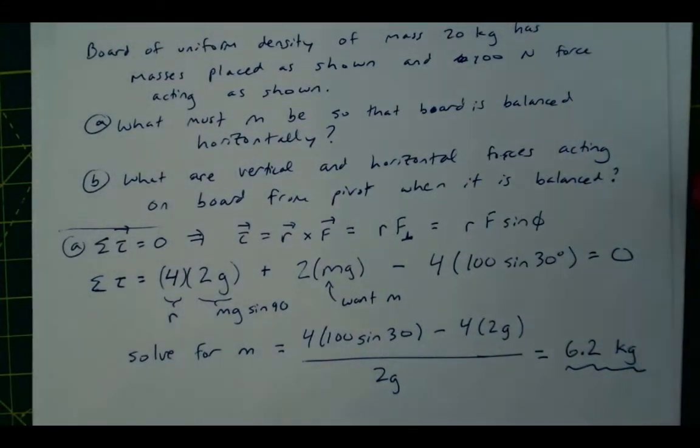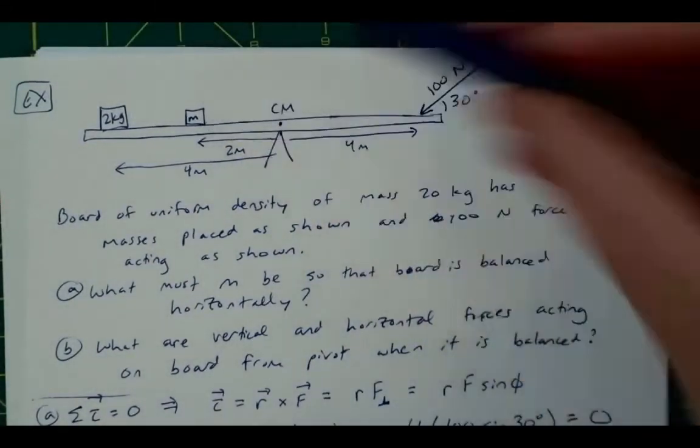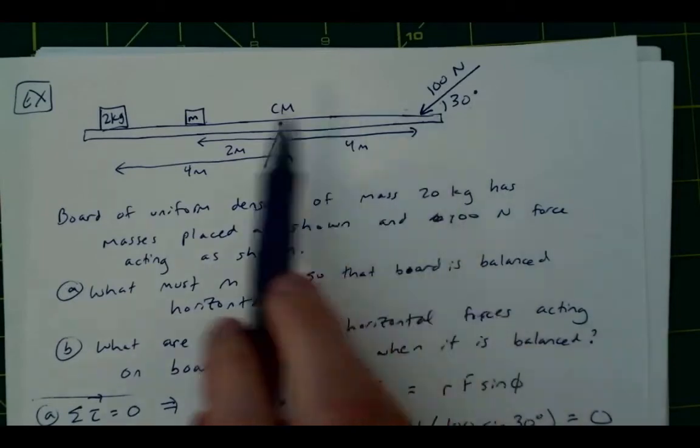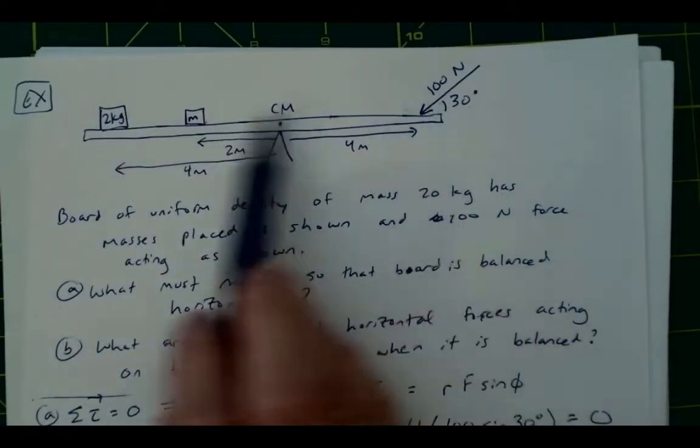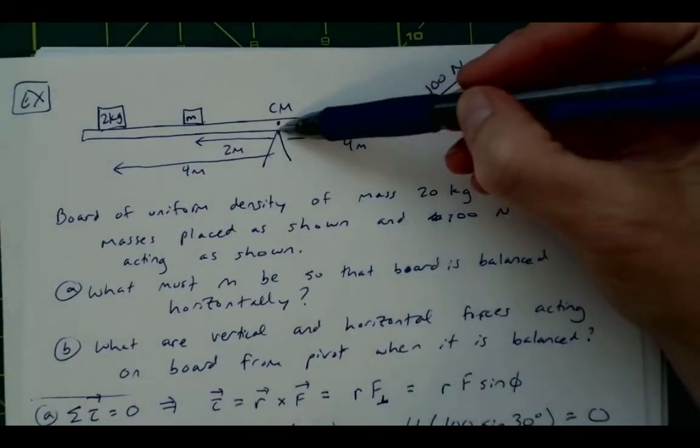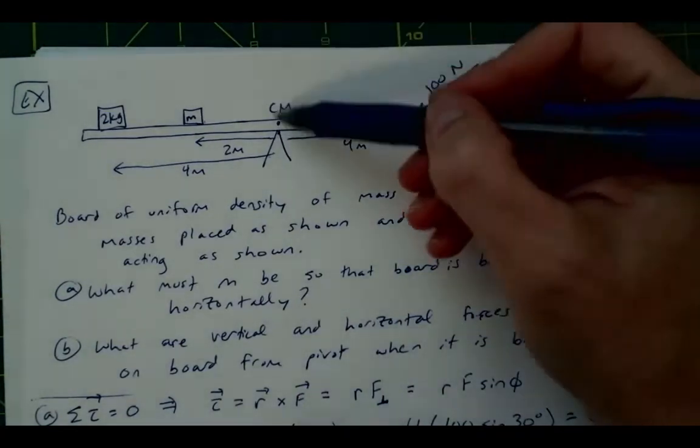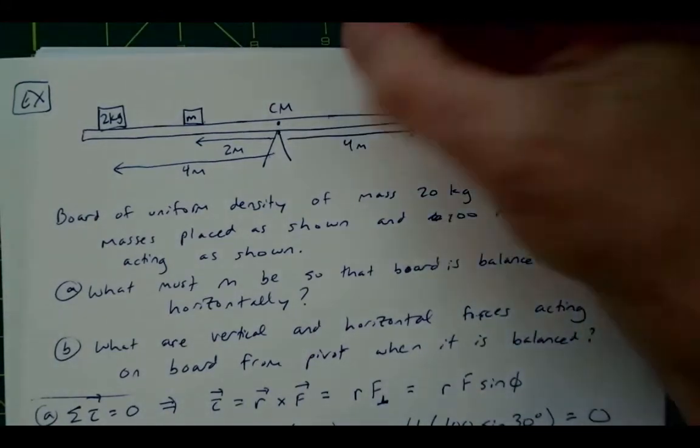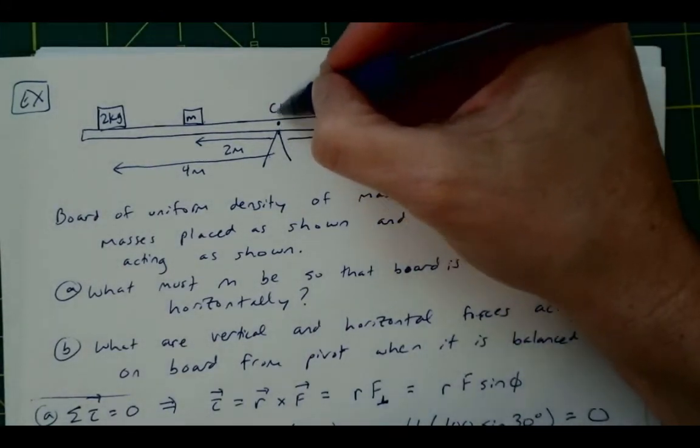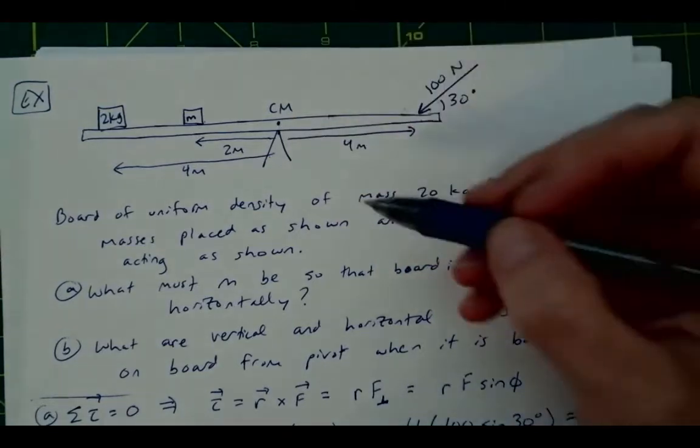Once we know what that mass is, right, we know now what that mass is, then we have a clear picture of all of these forces acting here, and we know the weight of the beam. So now we can determine what the horizontal and vertical forces acting at the pivot will be.